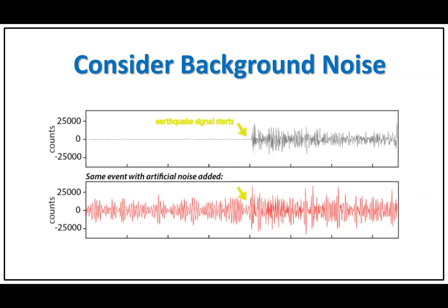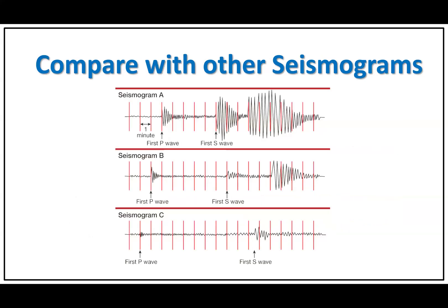Consider background noise. Seismograms also record background noise, which can be caused by human activities, weather phenomena, or other sources. To accurately interpret the seismic waves, it's essential to distinguish between the noise and the actual earthquake signals.